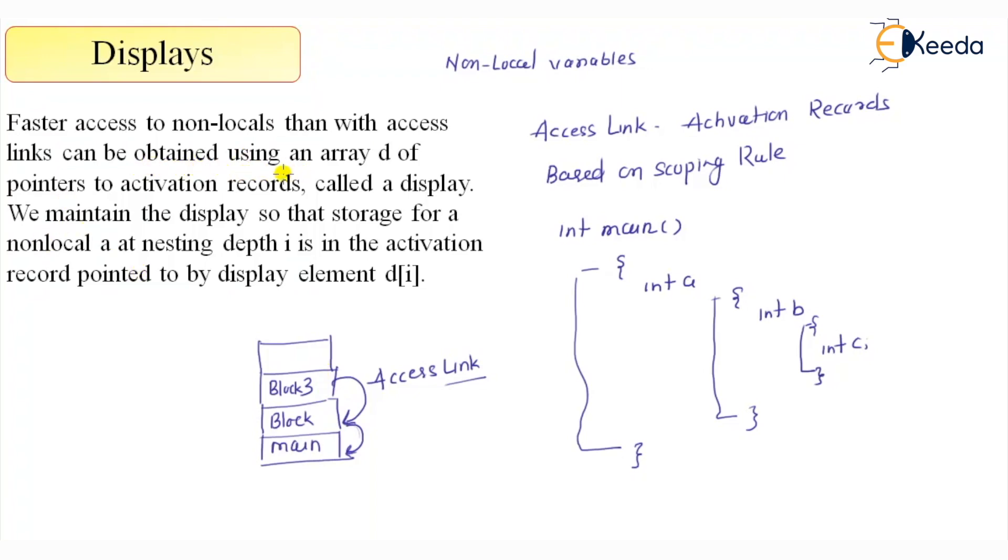But here, what it does is using array d of pointers to the activation record called displays. How it provides faster access? By using an array of pointers, and what they contain is basically the starting address of your activation record.